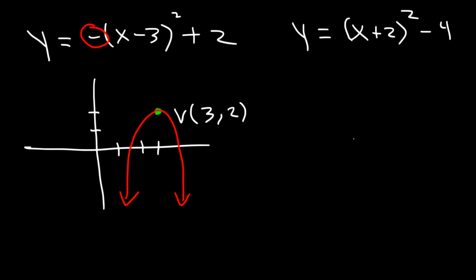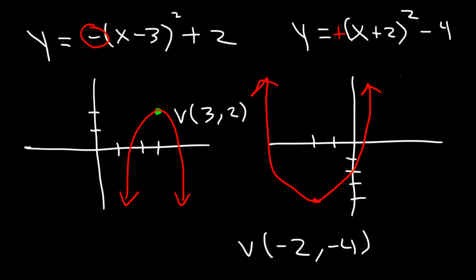And for the last one, the vertex is negative 2, negative 4. The graph shifts two units to the left and down four units. But we have a positive in front of the x plus 2 squared, so it's going to open upward. Anytime you have a positive x squared, it opens upward. If there's a negative in front of the x squared, it opens downward.